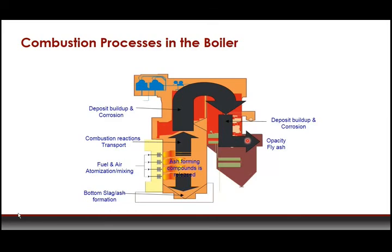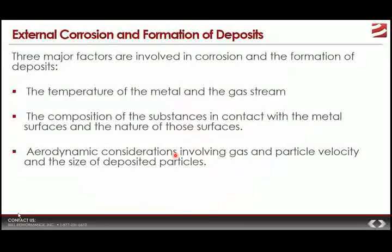This area, what they call the cold end or lower temperature end, is where you'll need to address concerns about opacity and fly ash issues. Meanwhile, deposits and bottom ash are still being formed in the furnace, and operators are always on the lookout for instances of hot and cold end corrosion. Given that corrosion and deposit formation are issues operators have to deal with, let's look at each of these a little bit closer.